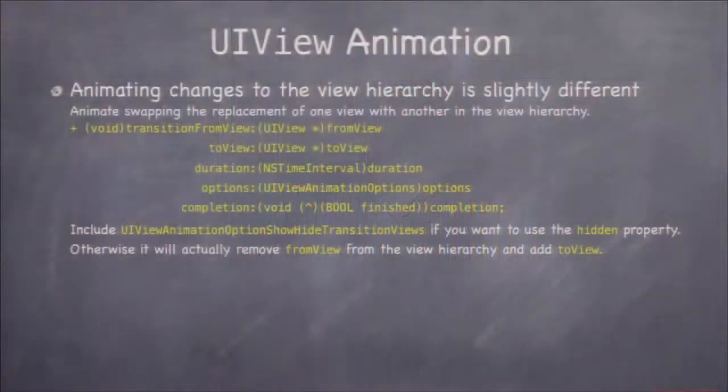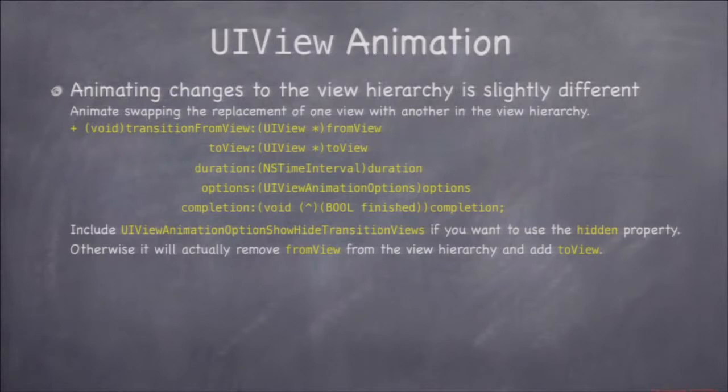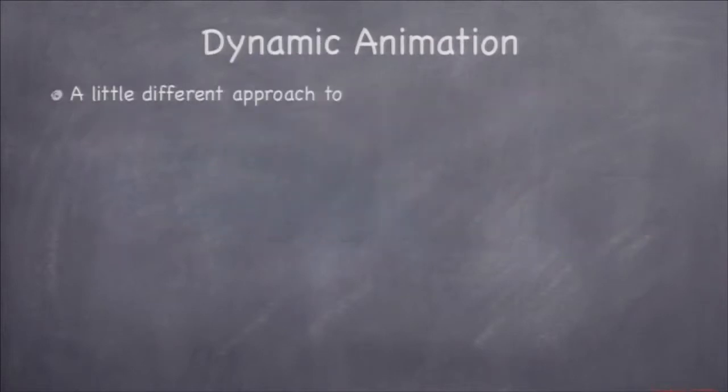If you're changing the view hierarchy — like swapping one view out and putting a new one in — you can use 'transition from view to view'. This is similar to the other transition method, except instead of having a single view whose state you change, here you're replacing one view with another. It's called almost the same thing: transition from view to view.